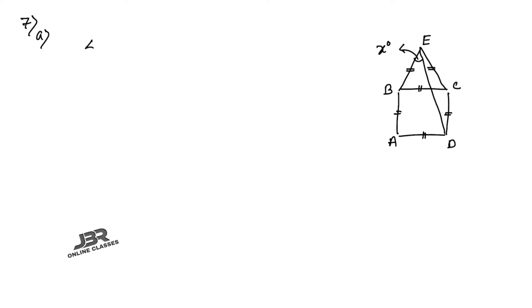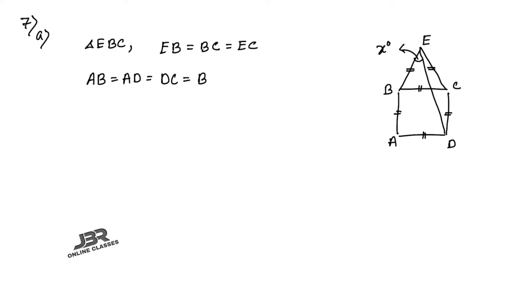Triangle EBC is an equilateral triangle, so all sides are equal: EB = BC = EC. And ABCD is a square, so AB = AD = DC = BC. That means all sides are equal — the side of the equilateral triangle equals the side of the square.